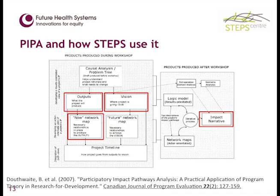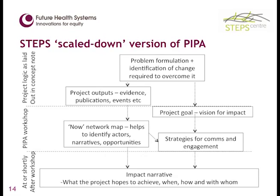Causal loop diagrams tend to be more explanatory where theories of change are more instrumental in how you're going to engage the system. PIPA starts by thinking about the vision or objective, then creating a network map. It's important — and maybe this should go in the communicating complexity discussion — that you try a combination of different ideas, because if you just see a visualization without knowing what to look for, it's very difficult to understand. So they also create an impact narrative based on the network map. Before an actual PIPA workshop, you do problem formulation, then discuss the project goal or vision for impact before creating the map and looking at the strategy.